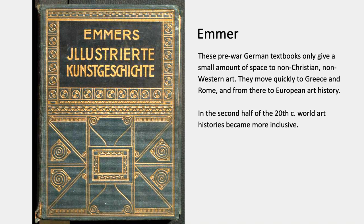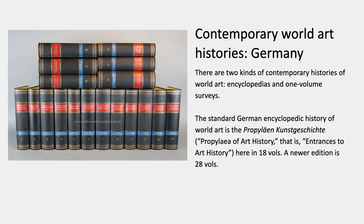In the second half of the 20th century, world art history became much more inclusive, when the center of production moved to North America. But before I talk about that, I just want to show another kind of world art history: the encyclopedia or the reference work. These are not textbooks — they wouldn't have been assigned, but they would be in the library for reference. Most countries that have a lot of art history, especially in Europe, developed these before mid-20th century.